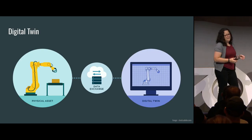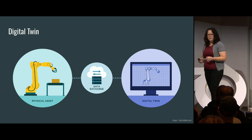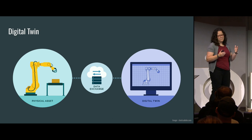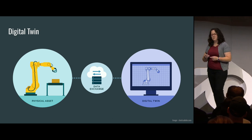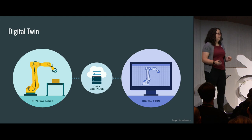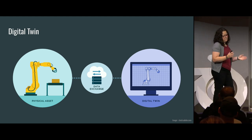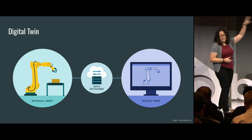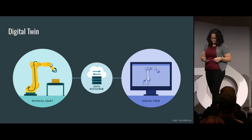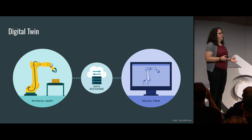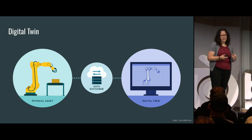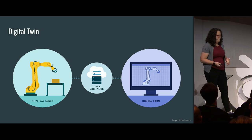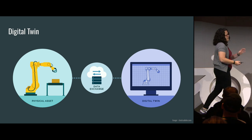So, digital twins. The definition of a digital twin really varies depending on the source, but in general it's a digital representation of a physical object, system, or process that is updated in real time with its physical counterpart. You have your physical asset, your digital twin, and a lot of data going back and forth in between. These were originally used to increase productivity in the manufacturing industry around 2002, but now they're being used across many disciplines.